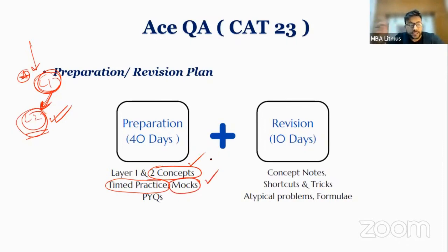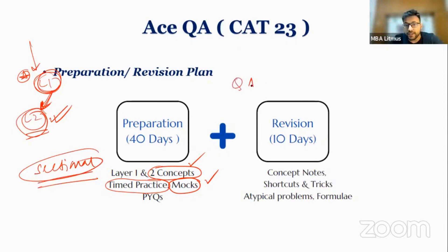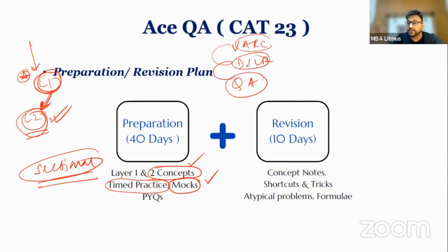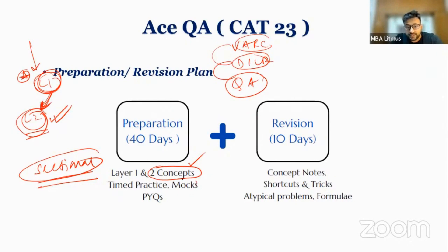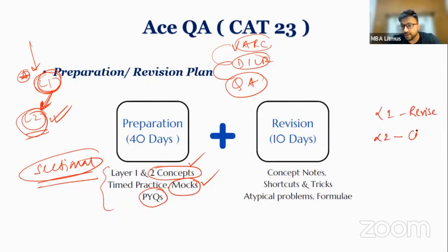One thing people say is that they focus only on sectional scores. Just sectional — the actual overall score doesn't matter. But remember, QA is always alongside VARC and DILR. The goal is to not limit your score. You need to build up QA. So in the last 50 days: layer one is revised, layer two is clarified, and then you practice your mocks and manage your time effectively.